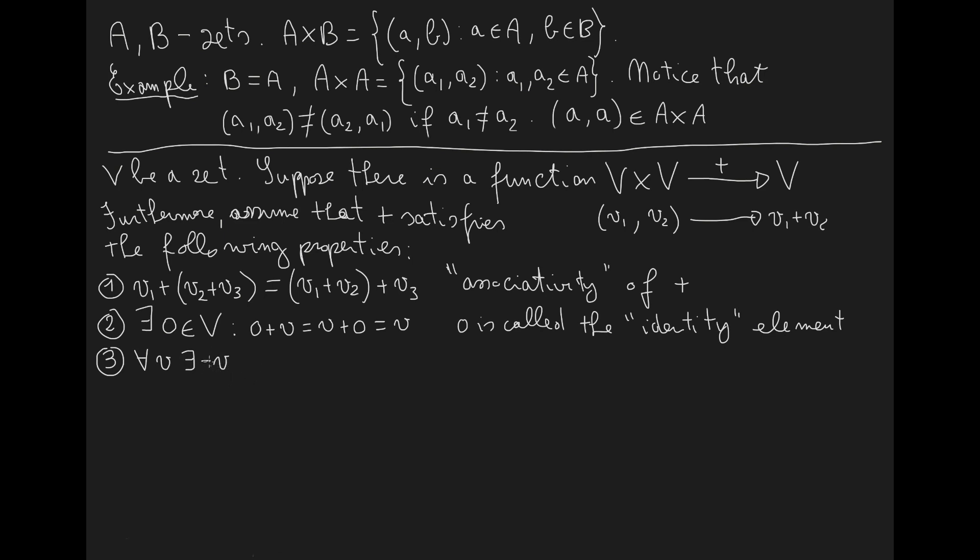So what property does this negative V have? There exists negative V such that if we sum V with negative V on the right or on the left, we will obtain the identity element zero of property number two.